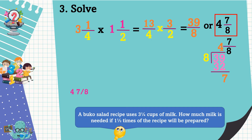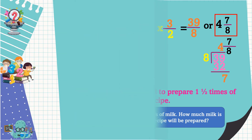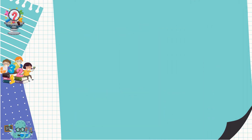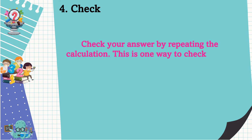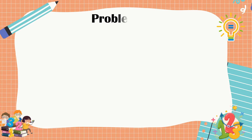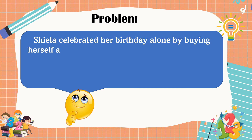Thirty-nine over eight equals four and seven-eighths. So four and seven-eighths cups of milk are needed to prepare one and one-half times of the recipe. We already solved the problem. The last step is to check — verify your answer by repeating the calculation. This is one way to check if your answer is correct.